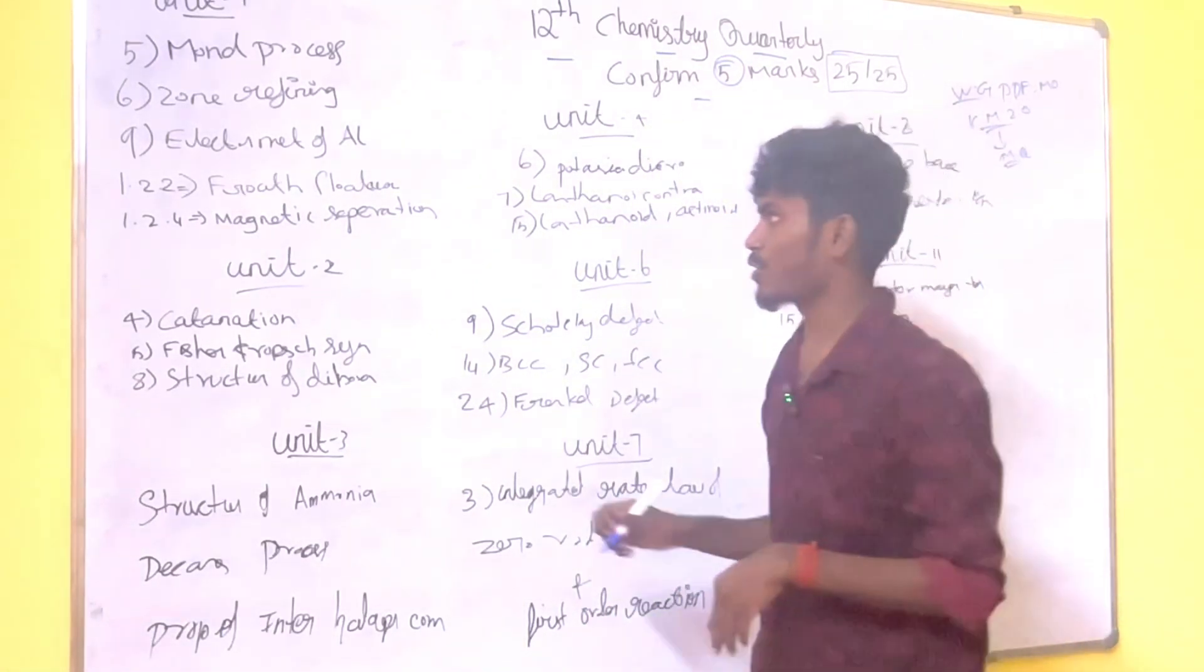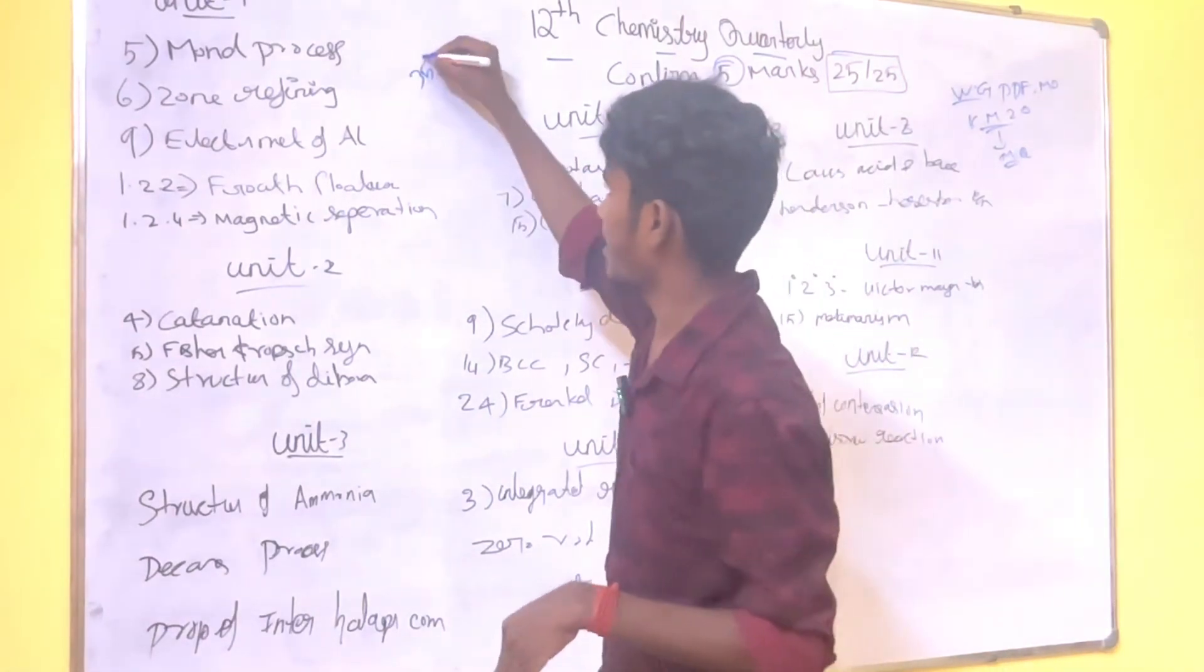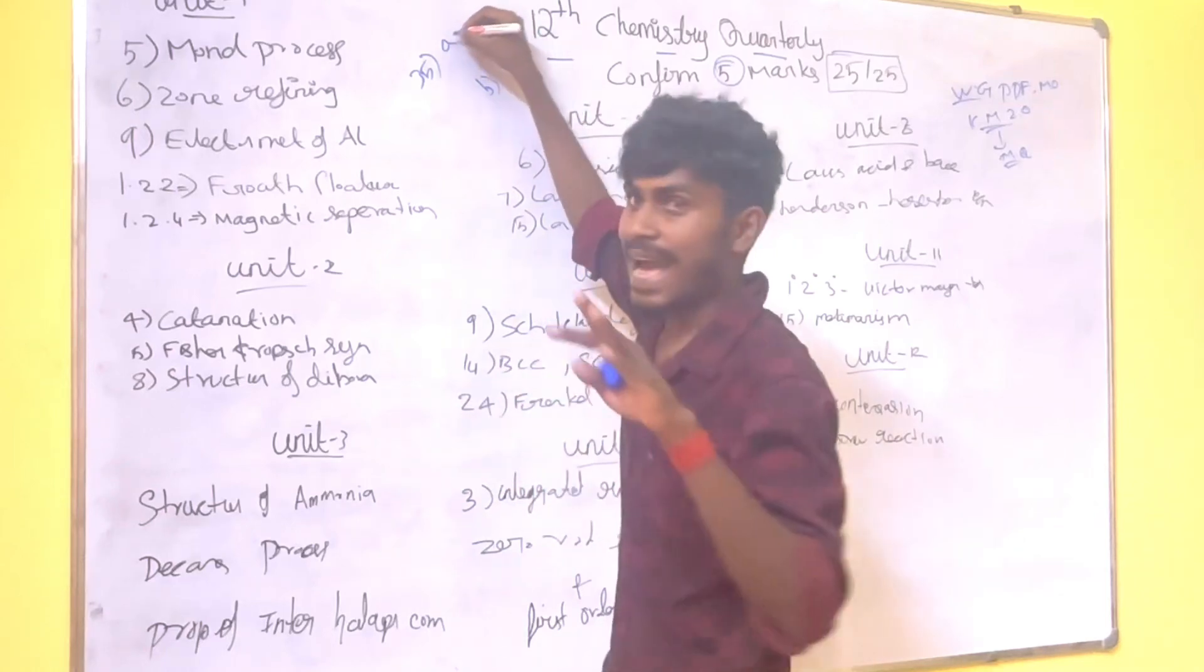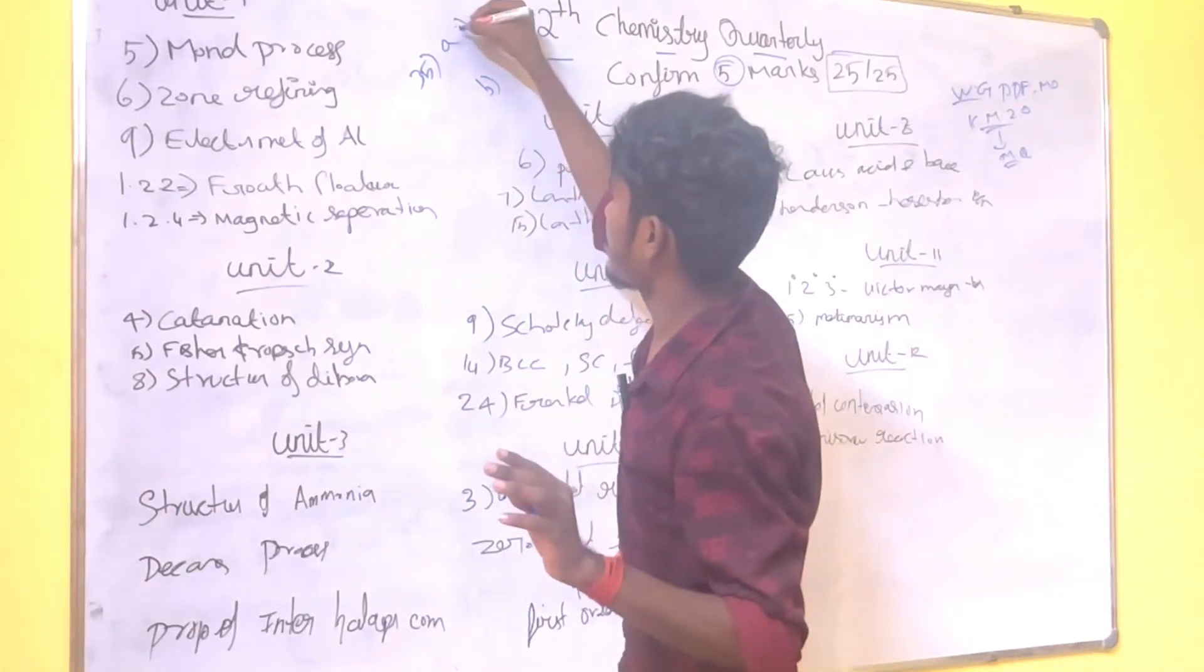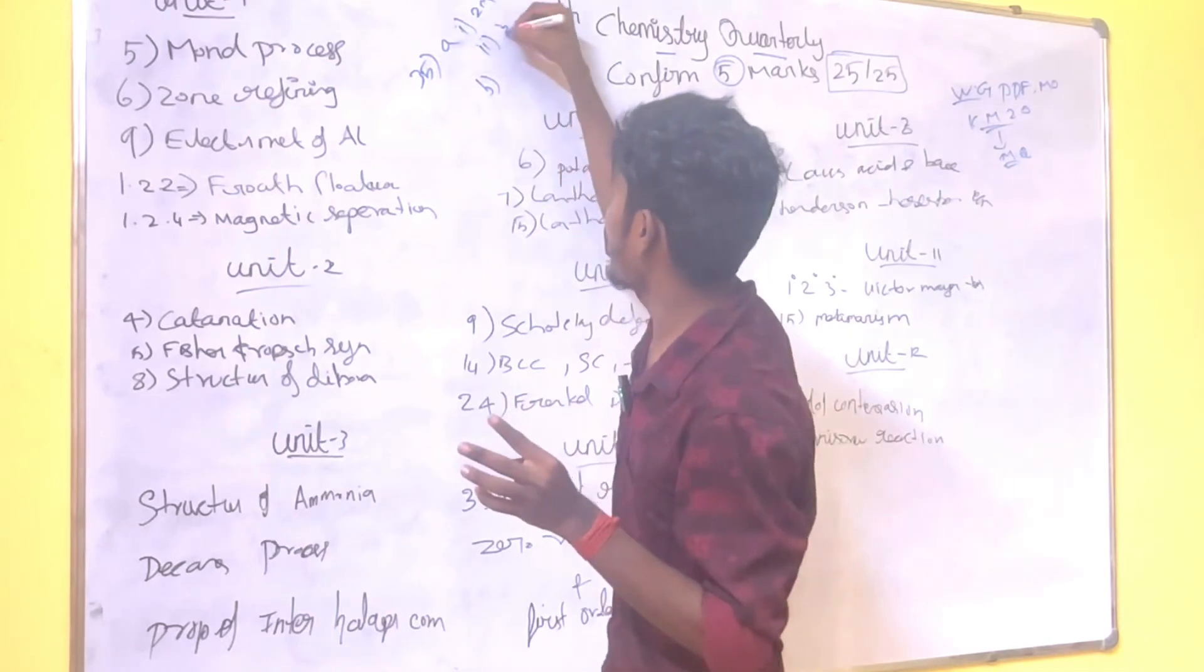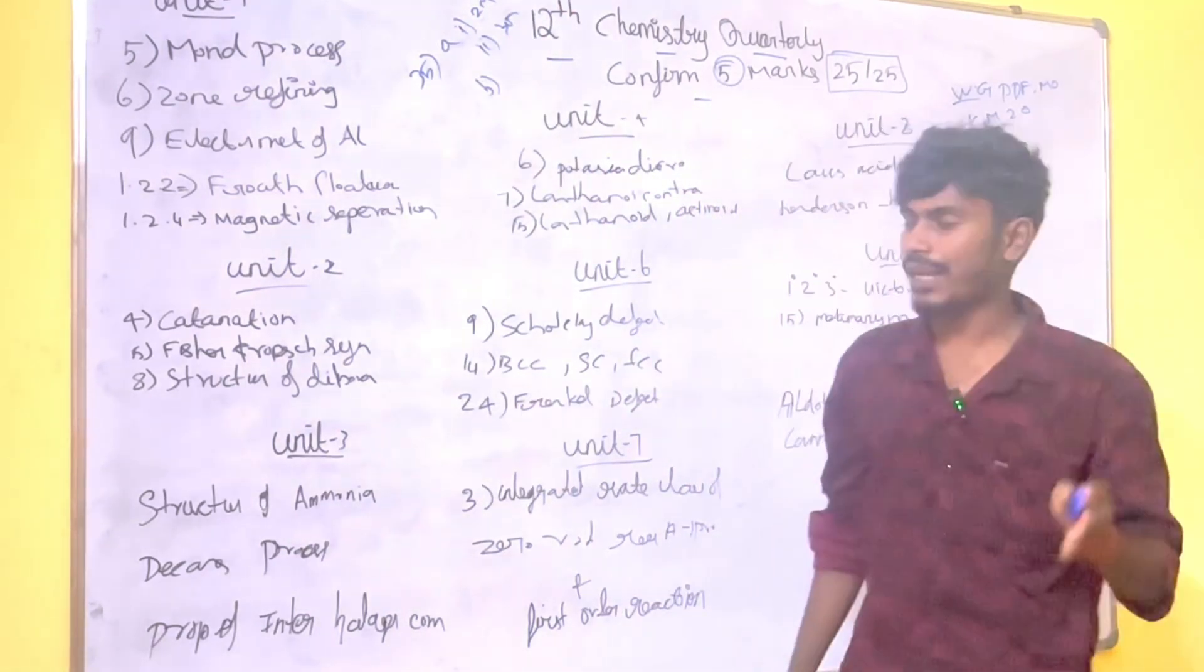For example, you will ask several questions. Some questions are subdivision 1, subdivision 2, that type of question which is one 2-3 mark combined. You will ask the combination type.